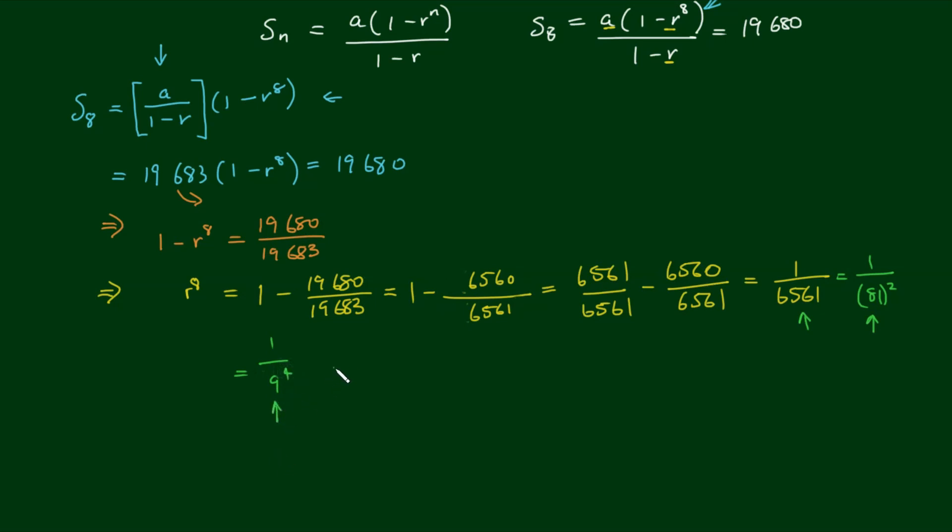And now 9 can be written as 3 squared. So we have 1 on 3 squared to the power of 4, and therefore we have 1 on 3 to the power of 8, which also equals 1 on 3 all to the power of 8.